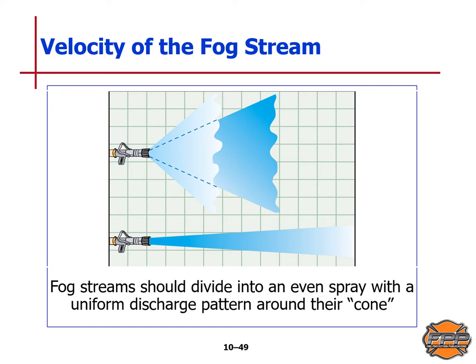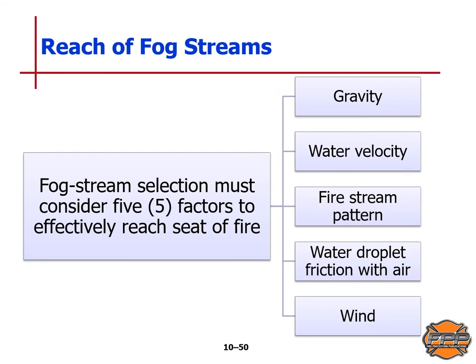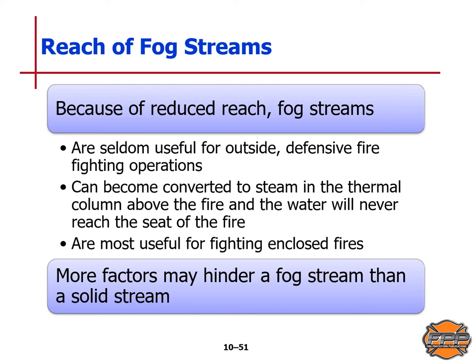Fog streams should divide into an even spray with a uniform discharge pattern around their cone. Fog stream selection must consider five factors to effectively reach the seat of a fire: gravity, water velocity, fire stream pattern, water droplet friction with air, and wind. Because of reduced reach, fog streams are seldom useful for outside defensive firefighting operations — they can become converted to steam in the thermal column above the fire and never reach the seat of the fire itself. Fog streams are most useful for fighting enclosed fires, and there are more factors that may hinder a fog stream than a solid stream.